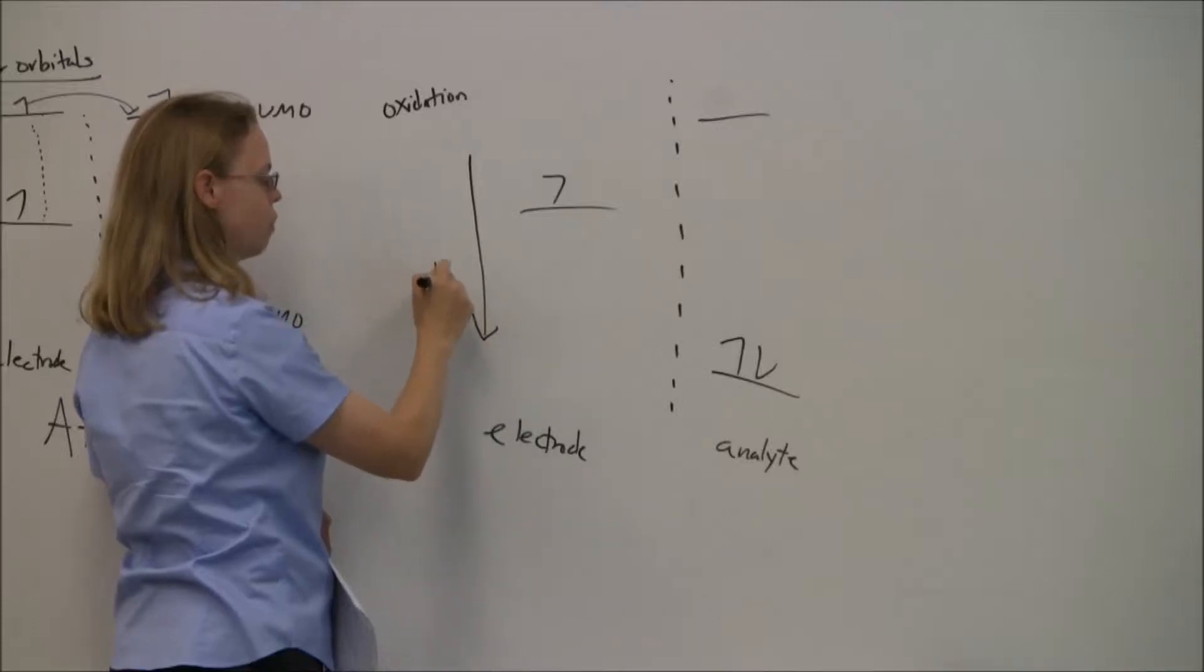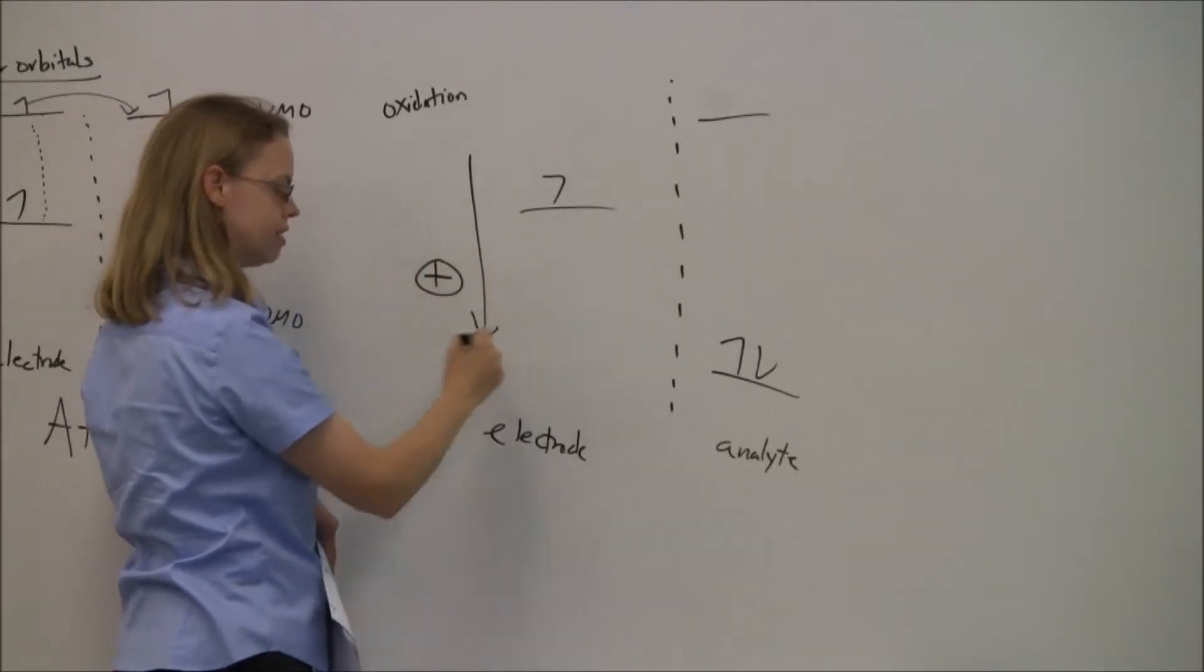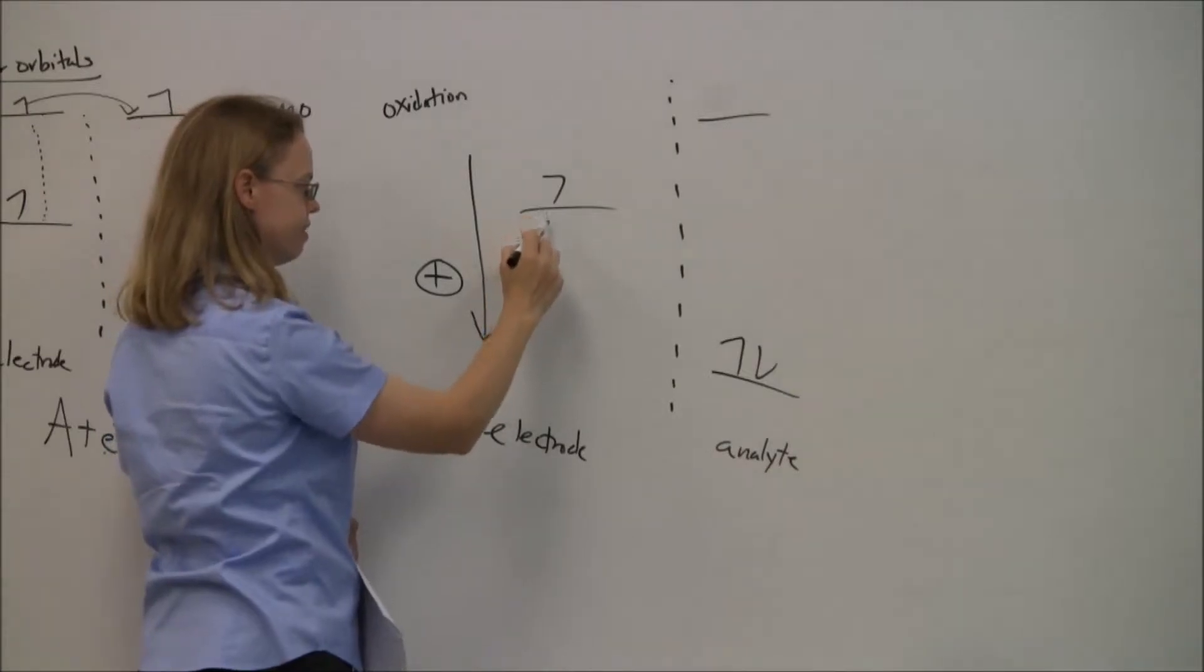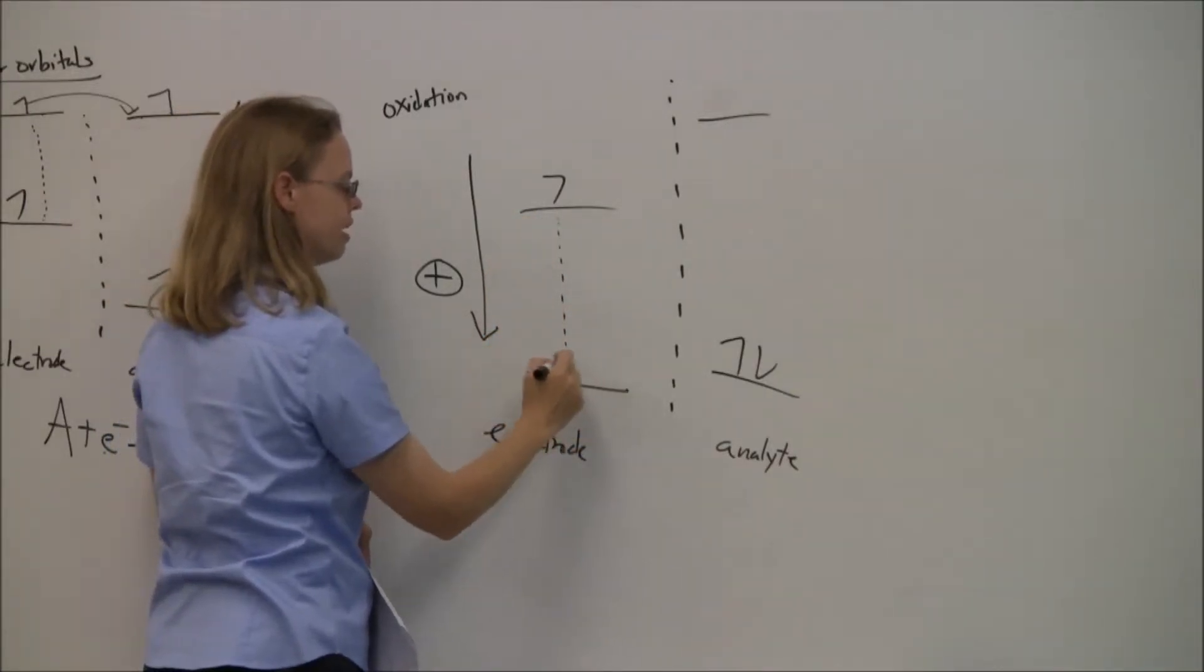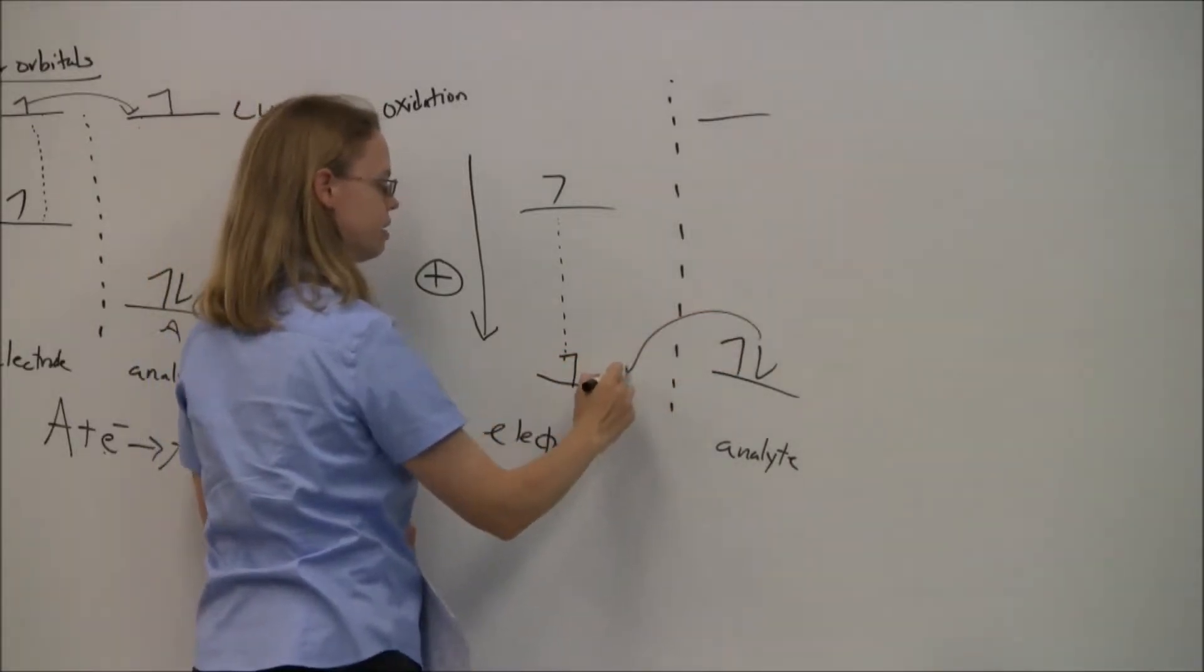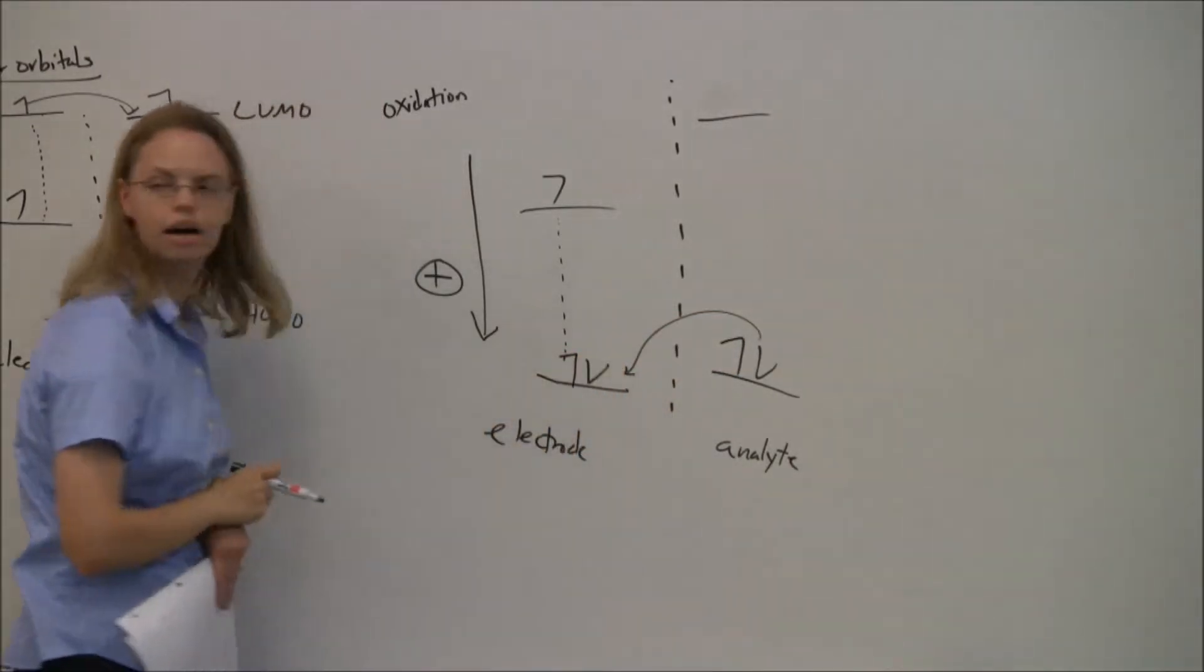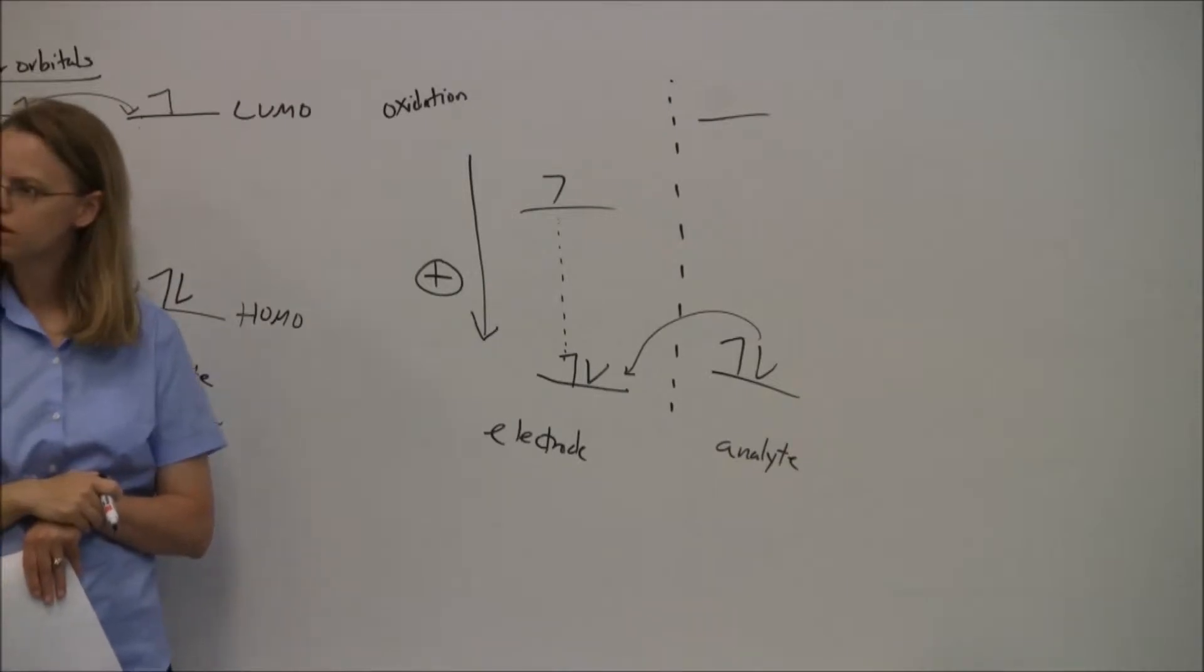As we go more positive, we're decreasing the energy of this, so this one's going to go down and down until here, and then you can transfer an electron over and fill that molecular orbital.